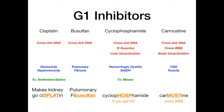Cyclophosphamide has 'HOSP' in the middle of the name — you have to go to the hospital if you get hemorrhagic cystitis, the most serious acute adverse reaction of the G1 inhibitors, treated with mesna. Carmustine — 'must' is in the name, because it must cross the blood-brain barrier. These name-based mnemonics help keep things simple.